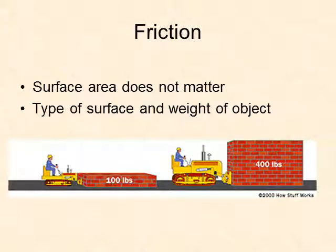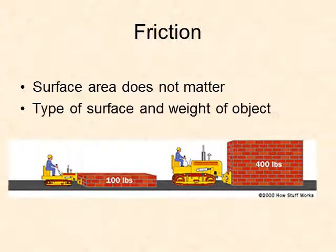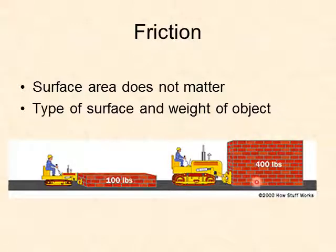Now, some things that you think you might know about friction are actually not true. Many people think that the surface area matters — in other words, the more surface area you have, the more friction you're going to have. Well, it turns out that's actually not true. The surface area does not matter. The type of surface does matter, and certainly the weight of the object you're trying to move also does matter. But the surface area does not matter. So if we are trying to move two piles of bricks, the heavier pile is going to be much harder to move even though the surface area of the bricks touching the ground would be the same.